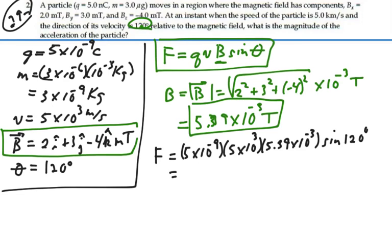So what is all this? I get 1.167 times 10 to the minus 7 newtons. Alright, so that's the magnitude of our force. And if we want the acceleration, acceleration would equal this force divided by the mass.